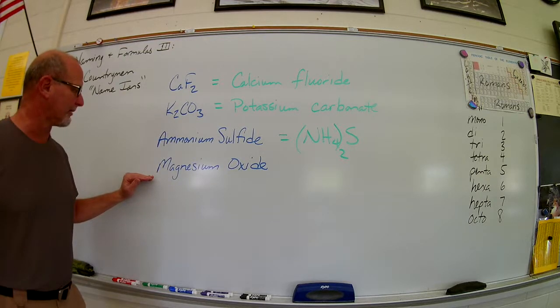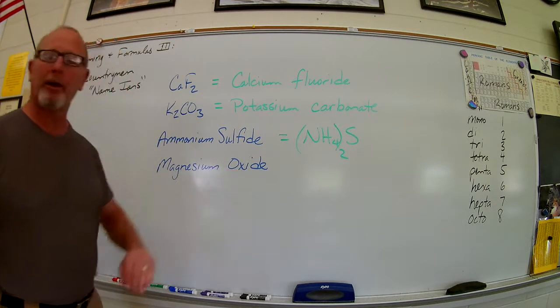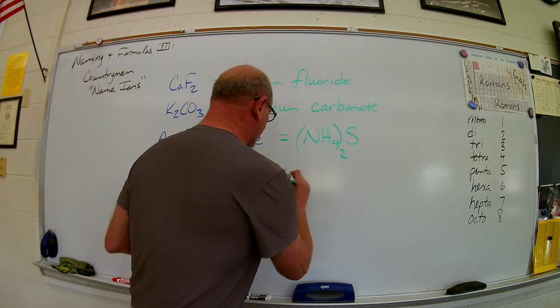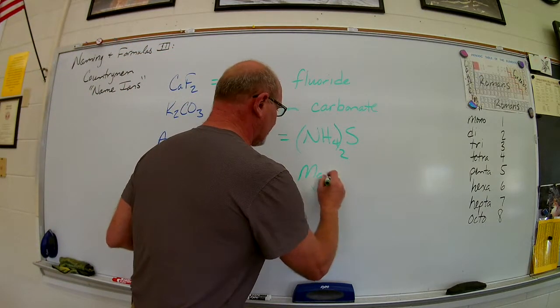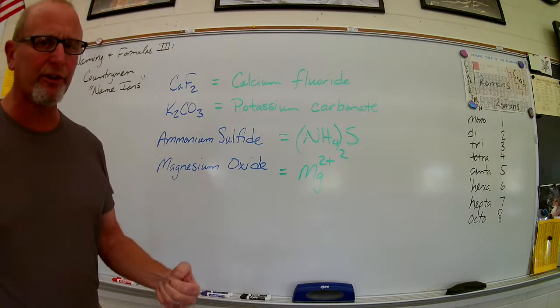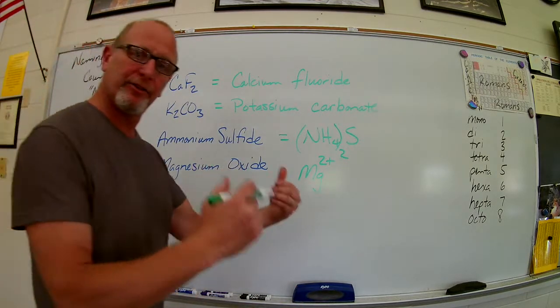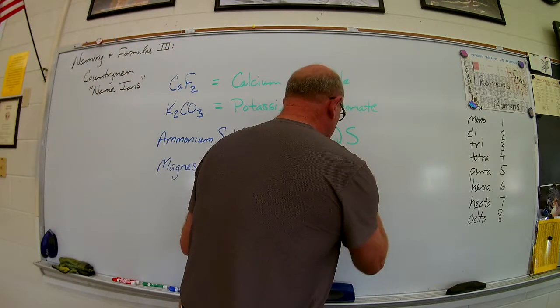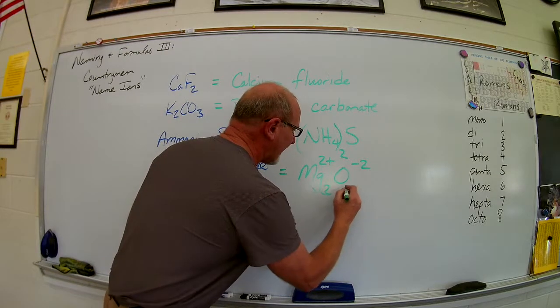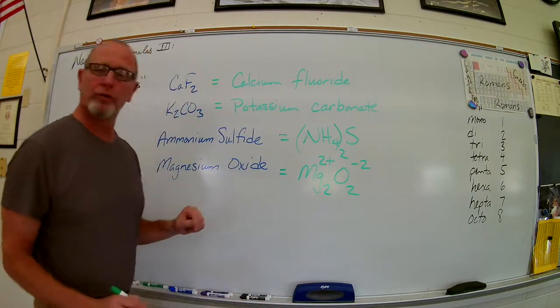Last one of these countryman I've got for you. Magnesium oxide. This one I've got to be careful because I want to watch my charges. I've got magnesium in column two. It's got a two plus charge. Oxygen oxide is the ionic form of oxygen. It's minus two. So if I were to crisscross these, I'd have MG2O2.